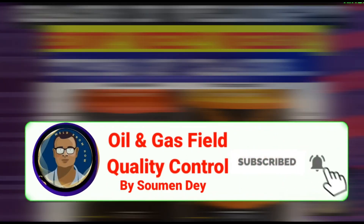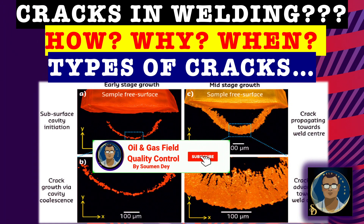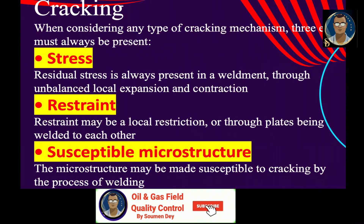Today we discuss a serious subject: welding cracks. This is very important for production welding. We will know the types of cracks, the reasons why and when cracks occur, and the remedies. This is also a very important chapter for the welding inspector course — CWI, CSWIP, or AWS. When considering any type of cracking mechanism, three elements must always be present; without one of these three, a crack cannot occur.